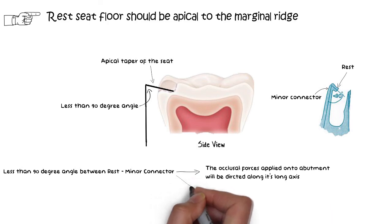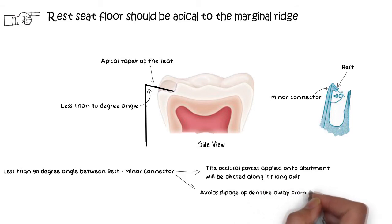This lowering of rest seat avoids the slippage of prosthesis away from the abutment, which may otherwise result in orthodontic forces being targeted onto the abutment itself. Hence lowering of the rest seat or making the floor of the rest seat taper in the apical direction from the marginal ridge is very important for the function of axial loading of the rest and also for the longevity of the abutment itself.